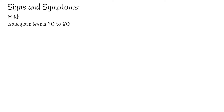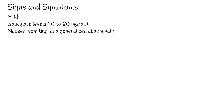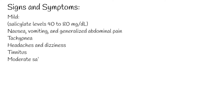In an acute salicylate overdose, the onset of symptoms will occur within 3-8 hours. For mild ingestions, with salicylate levels of 40-80 mg per deciliter, nausea, vomiting, and generalized abdominal pain are common. Tachypnea is usually present. Headaches and dizziness may also occur.